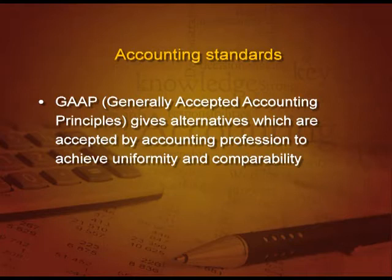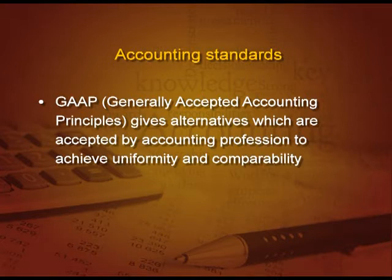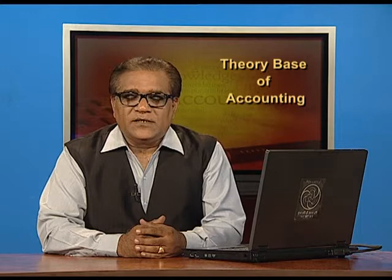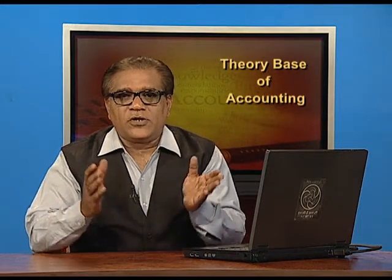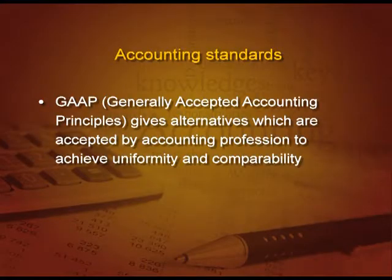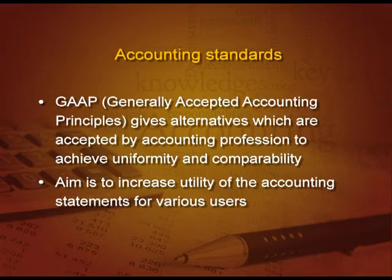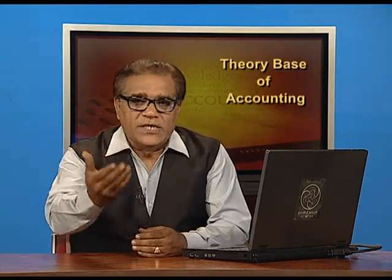First point: generally accepted accounting principles, which give alternatives that are accepted by the accounting profession to achieve uniformity and comparability. This means we have many alternatives available to achieve uniformity and comparability. The main aim is to increase the utility of the accounting statements for various users.